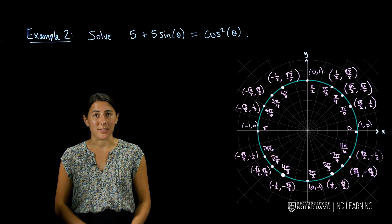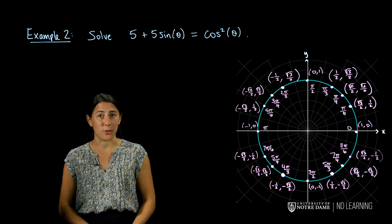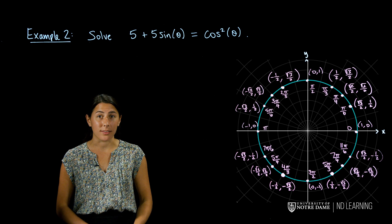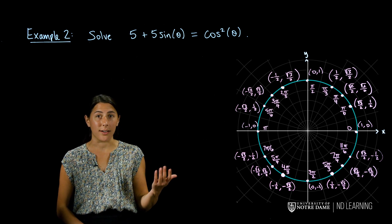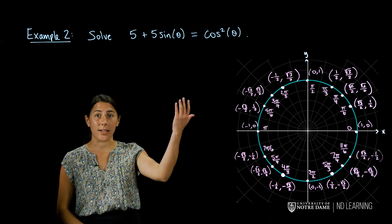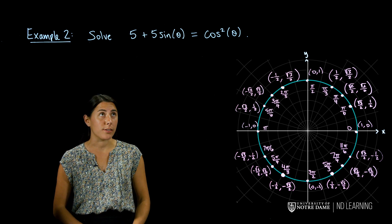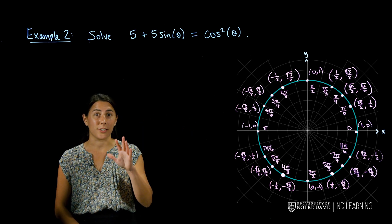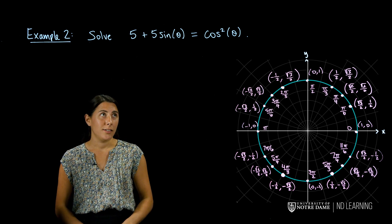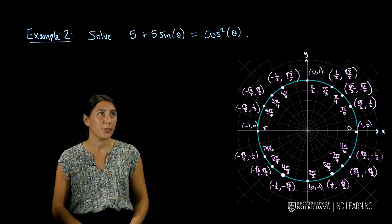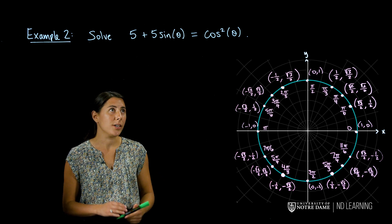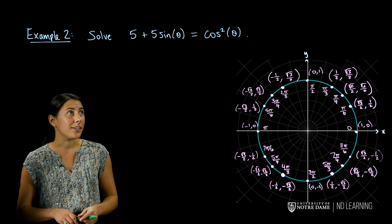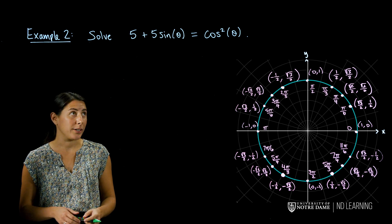Let's increase the difficulty by solving a quadratic trigonometric equation. So for example, if we wanted to solve 5 plus 5 sine theta equals cosine squared theta, we're asking what are the angles that satisfy this trigonometric equation? So the first thing that I want to do is rewrite it so it's all in terms of just sine. It's definitely more difficult because we see a quadratic term, but also there's some sines and cosines. So if I rewrite everything in terms of sine, I can use a Pythagorean trigonometric identity.